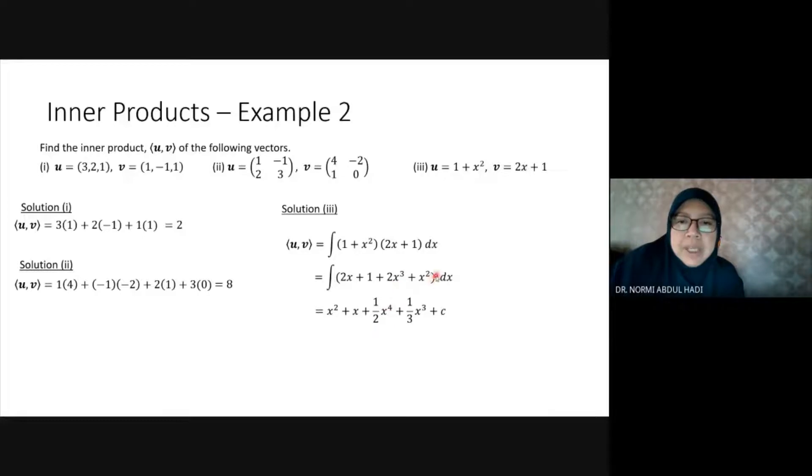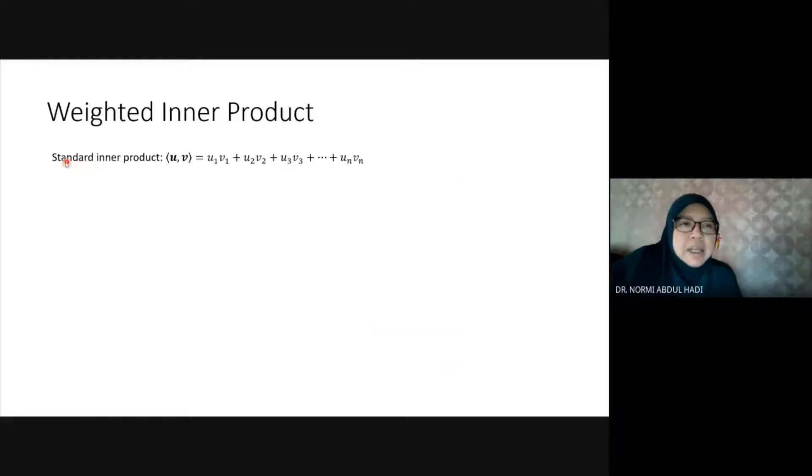Weighted inner product: (u,v) = w1u1v1 + w2u2v2 + w3u3v3 + ... + wnunvn, where w1, w2, w3, ..., wn are weights.